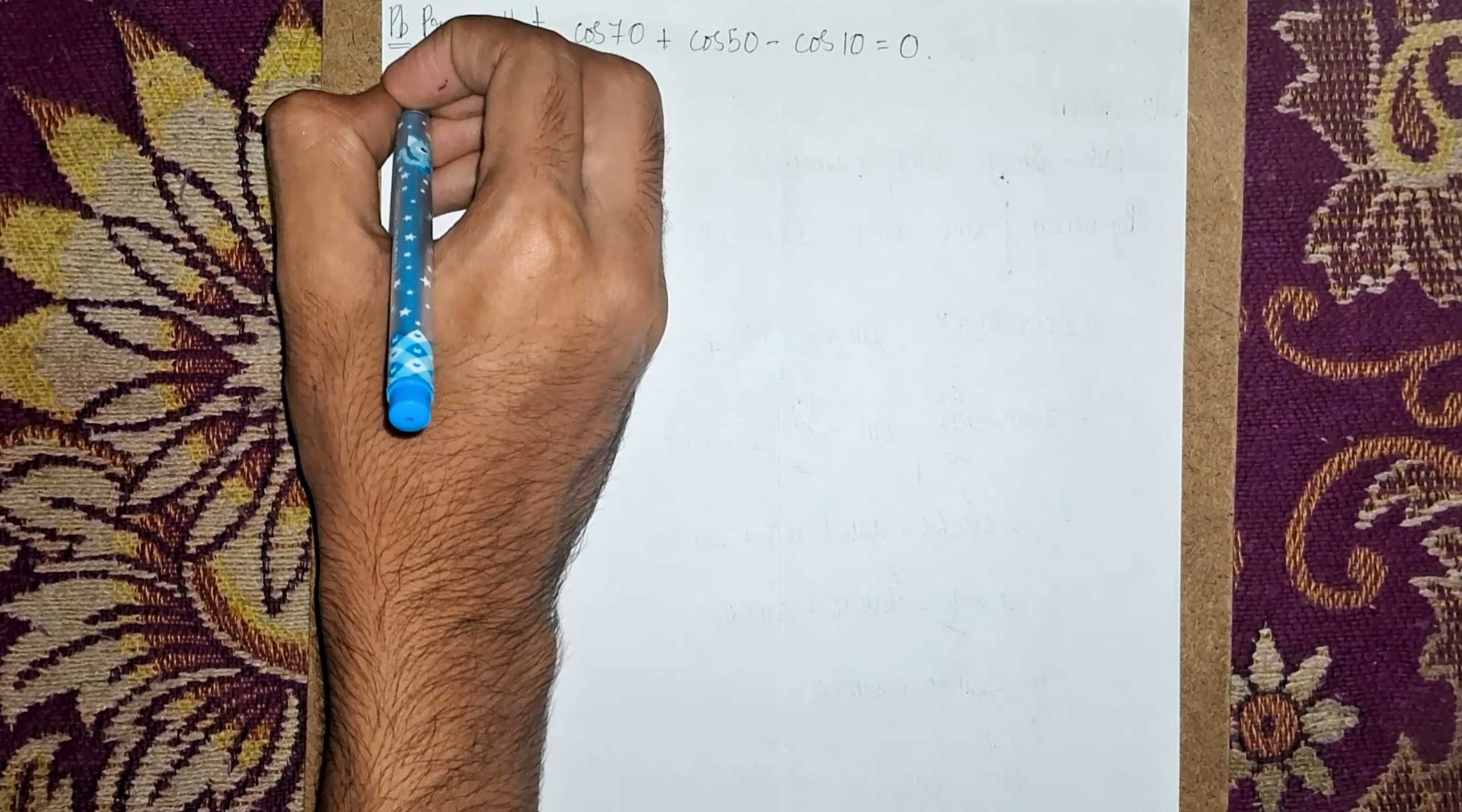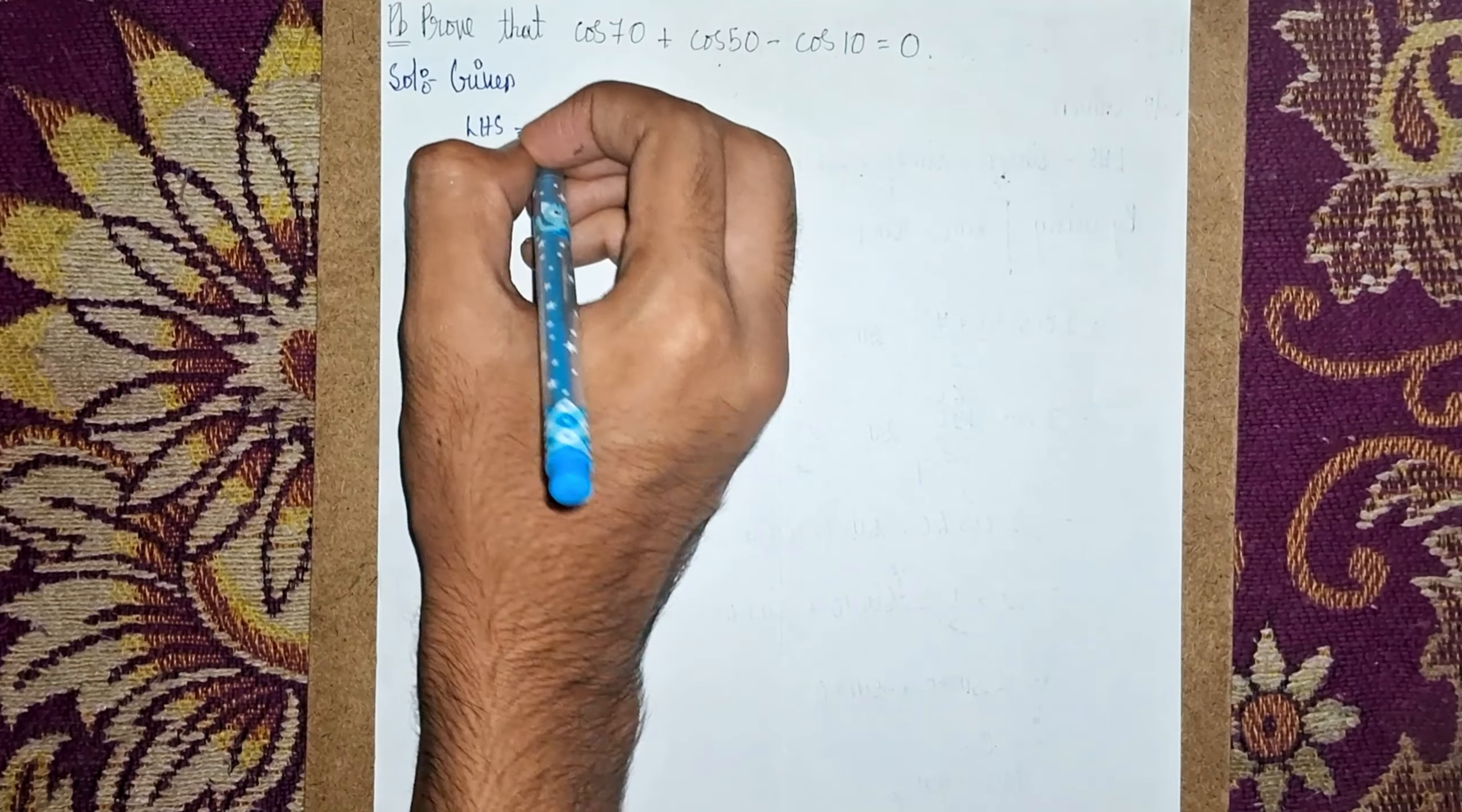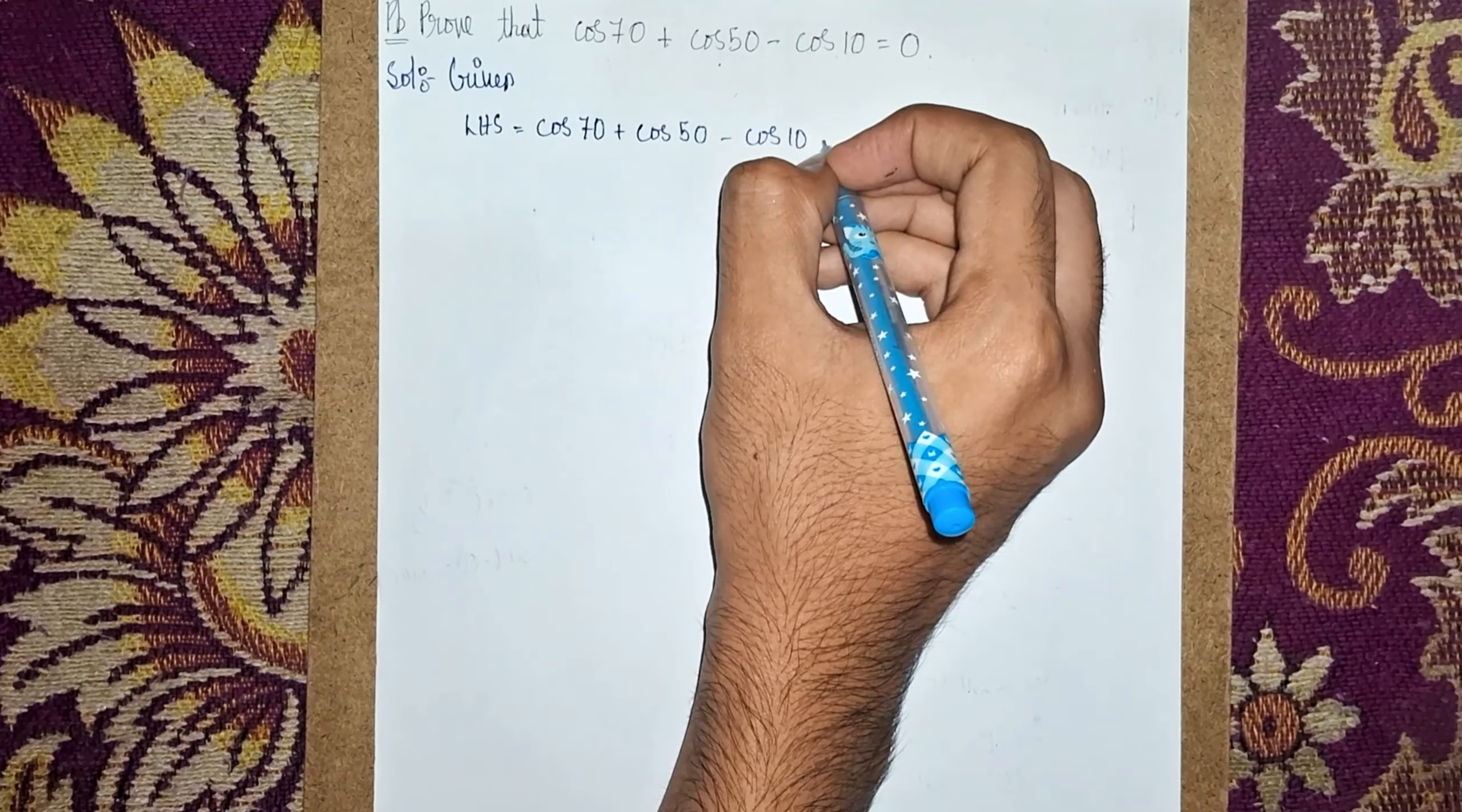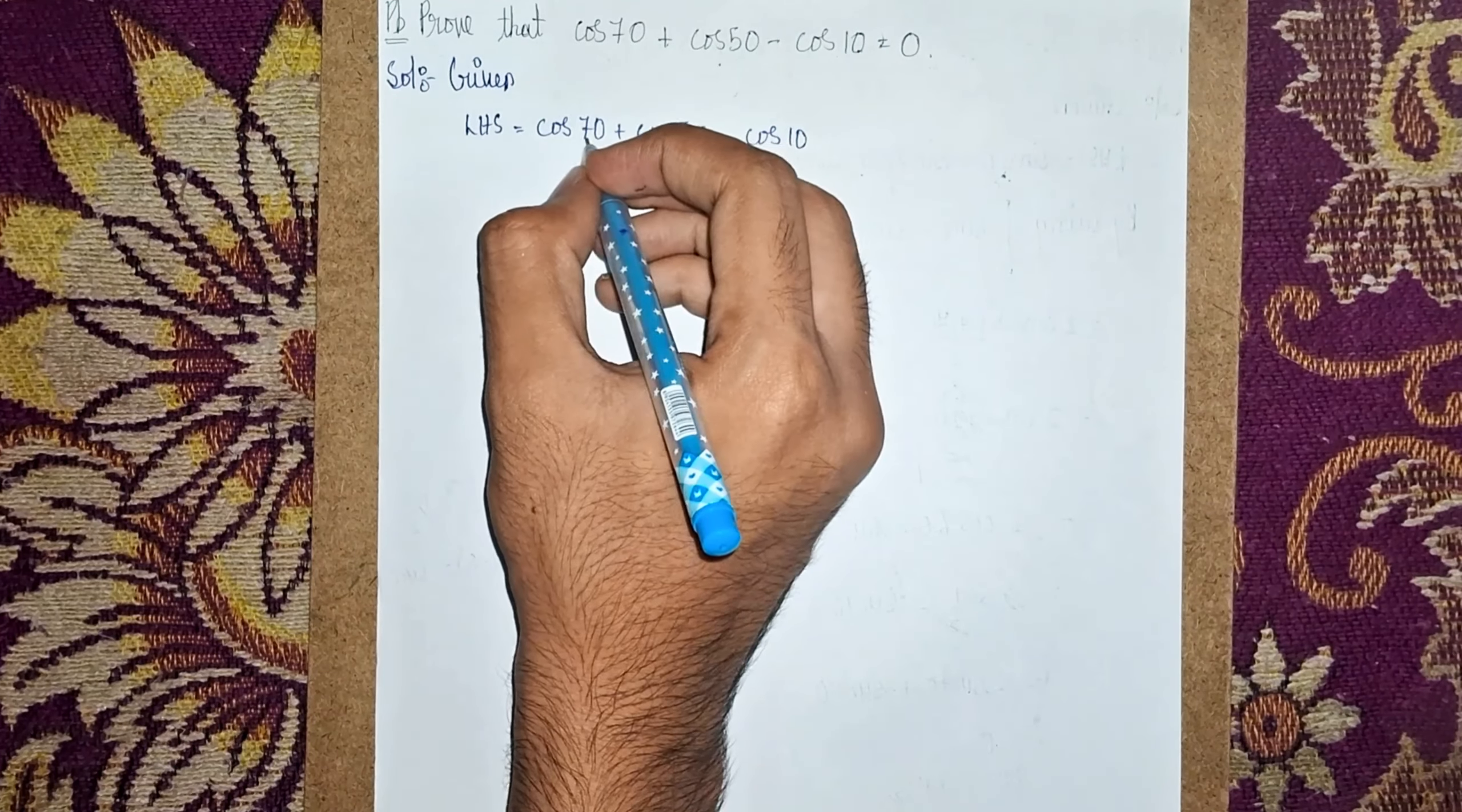What is given? Write here: Given - LHS (left-hand side) = cos70° + cos50° - cos10°. This is our left-hand side, okay? This is left-hand side, this side is right-hand side.